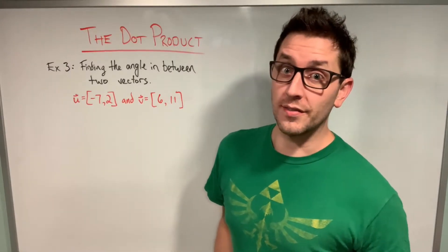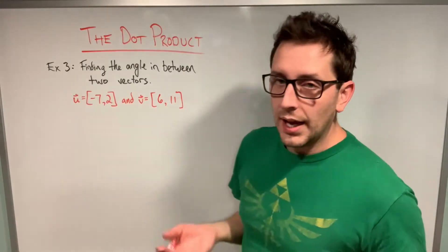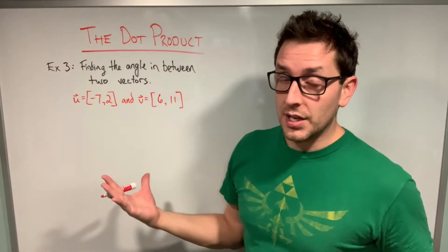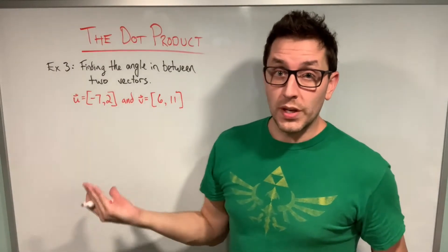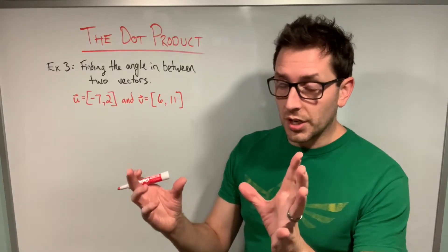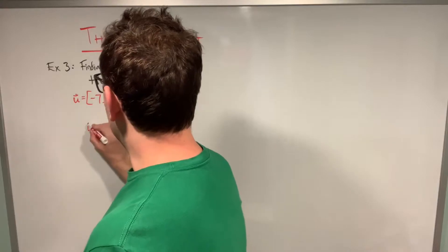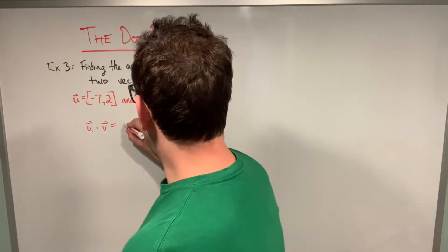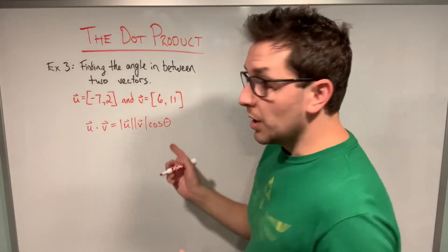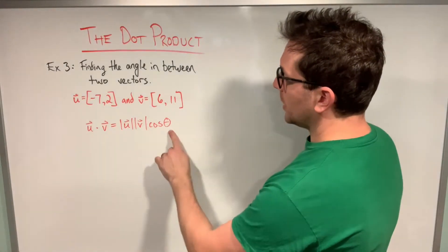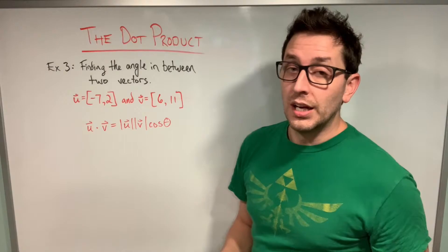This last example is a really cool application of the dot product: finding the angle between two given vectors. I have a u vector and a v vector and I want to find the angle between them. Since our dot product formula contains the cosine of theta — that angle between two vectors — all we need to do is rearrange the formula and solve for theta. We start with the basic dot product definition: u·v equals the magnitude of u times the magnitude of v times cosine of theta. The quantity I'm interested in is theta, but it's being multiplied by the magnitudes, so I need to isolate it using algebra.